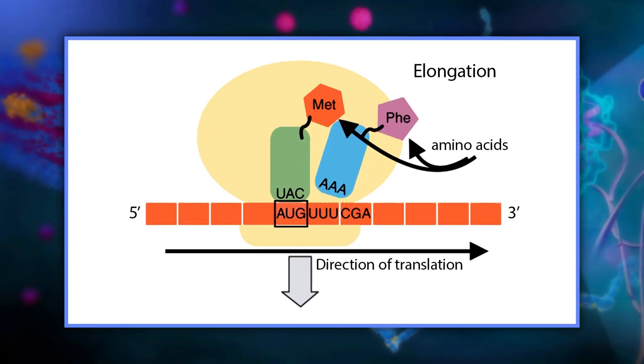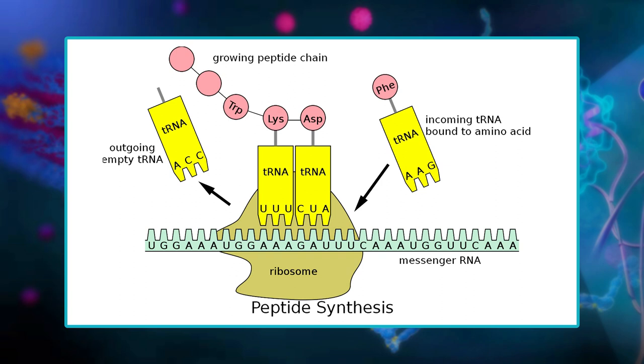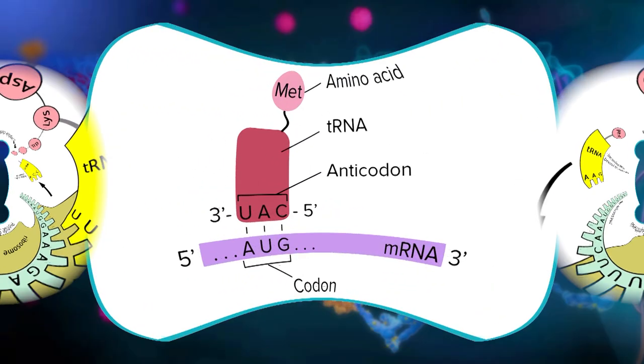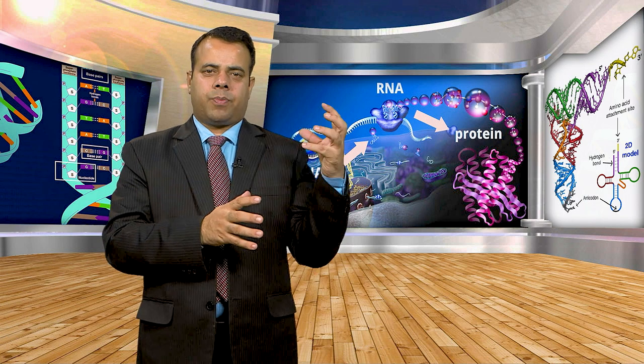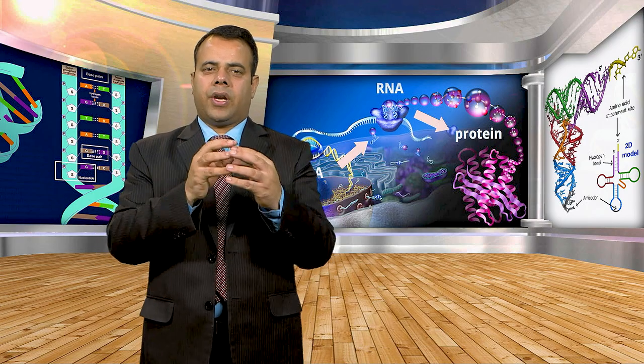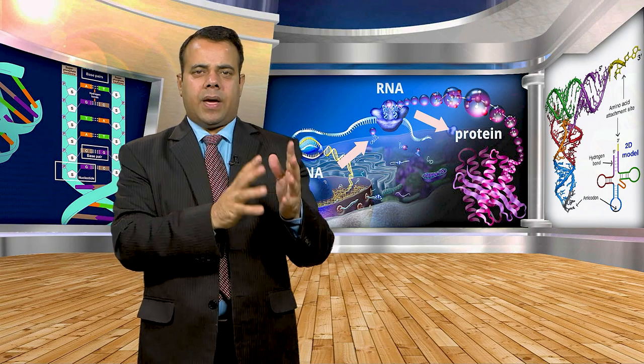In elongation, the amino acid chain gets elongated — the mRNA is read one codon at a time, and the amino acid matching each codon is added to a growing polypeptide chain. Each time a new codon is exposed, a matching tRNA binds to the codon. The existing polypeptide is linked onto the amino acid of the tRNA via a chemical reaction. The mRNA is then shifted one codon over, exposing a new codon. During elongation, tRNA moves through the A, P, and E sites of the ribosome. This process repeats as new amino acids are added.